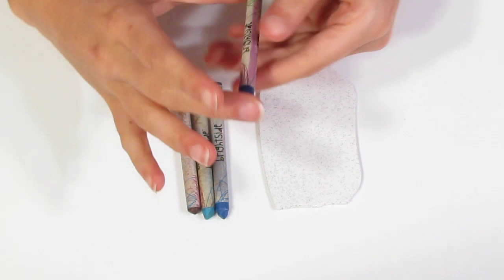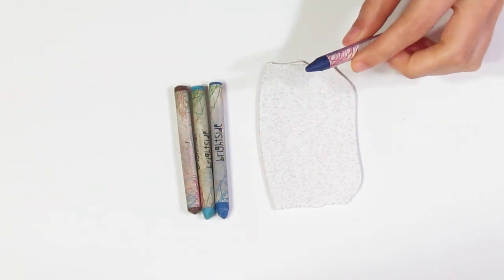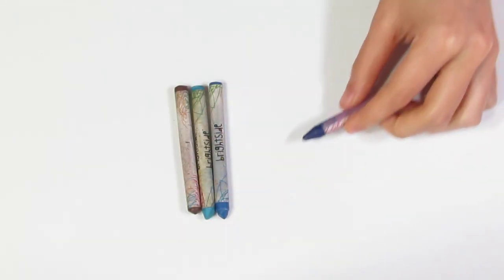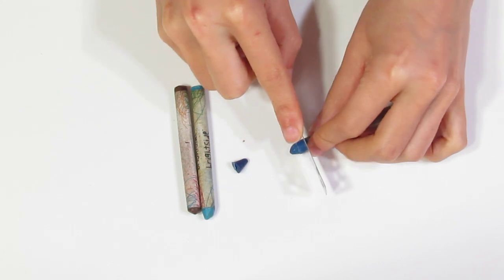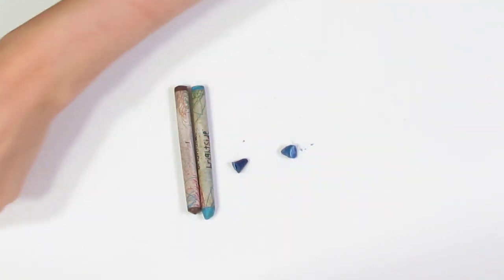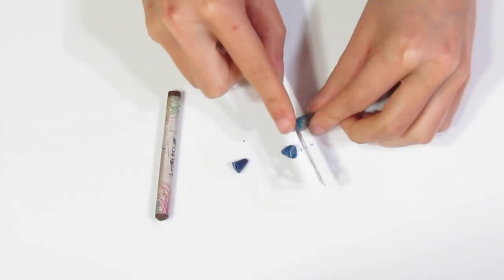So any wax crayon should work. All I'm going to do is put that to the side. And I've chosen a variety of blues and a brown that matches. I'm just going to chop off bits of this and we're mostly looking for the coloured wax.